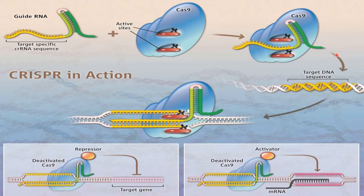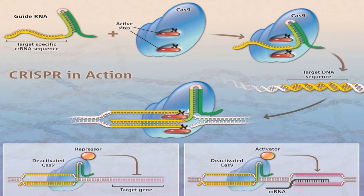Whenever the bacteria is infected with a bacteriophage, the bacteriophage will inject its DNA inside the bacterial cell. Once this phage DNA enters into the bacterial cell, it will be taken up by the CRISPR system, and that DNA will be complementary to the target-specific CRISPR RNA sequence.